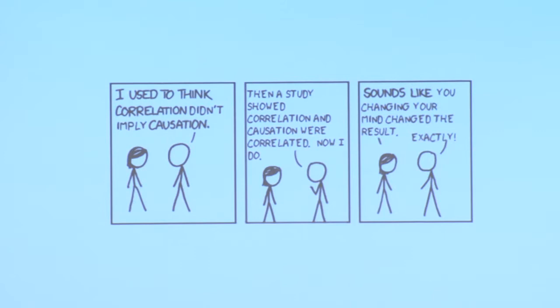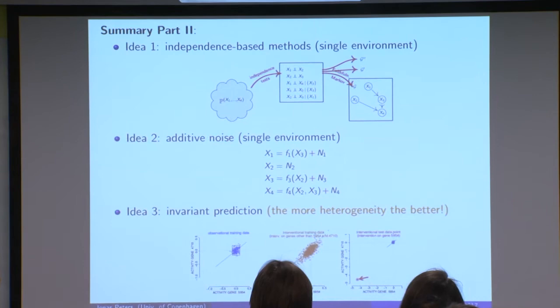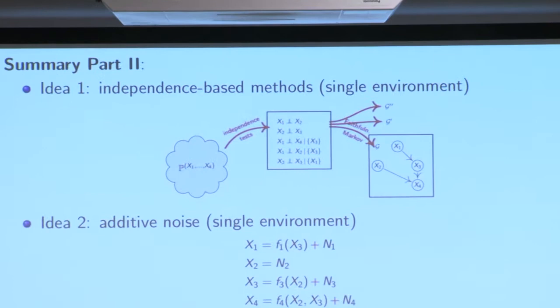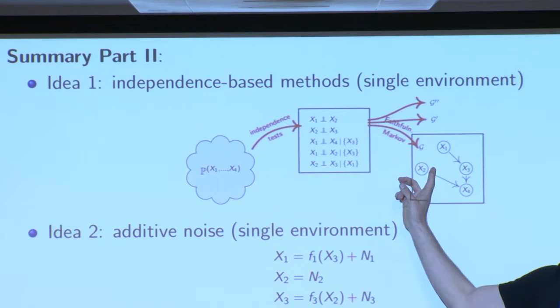In the last part of this mini-course, I would like to talk about applications to machine learning. This is a summary of what we have seen so far in part two. We looked at three ideas to wrap up the last sessions. The first one was this independence-based idea, where we establish a link between conditional independencies and d-separation statements in the graph. This was done by the Markov condition.